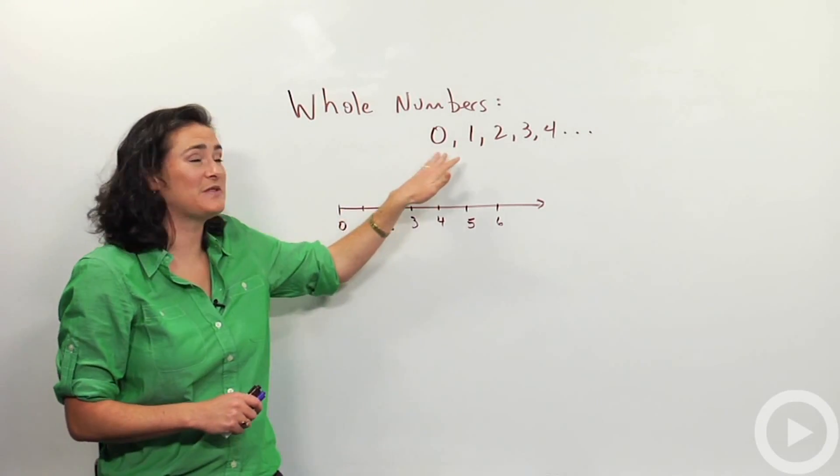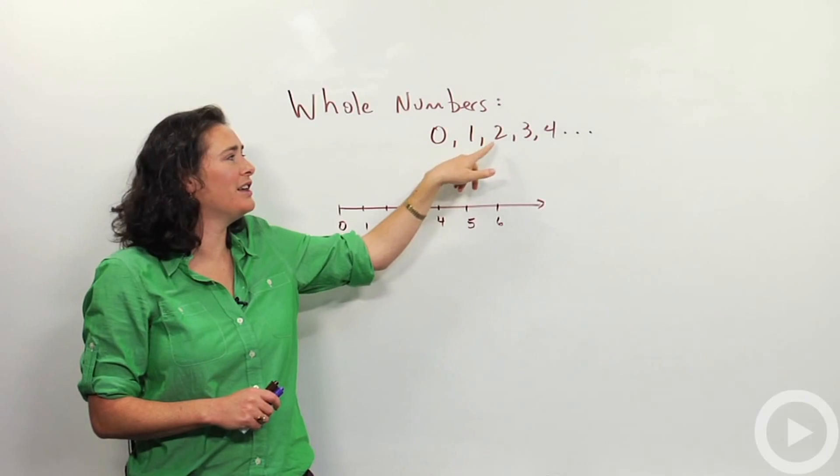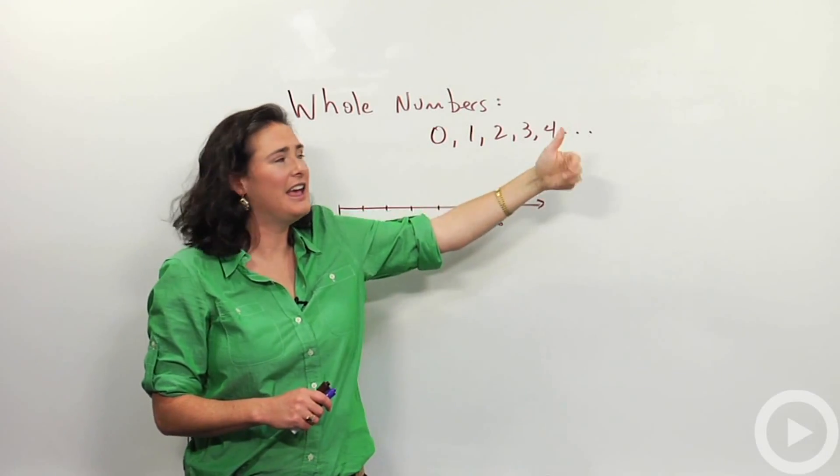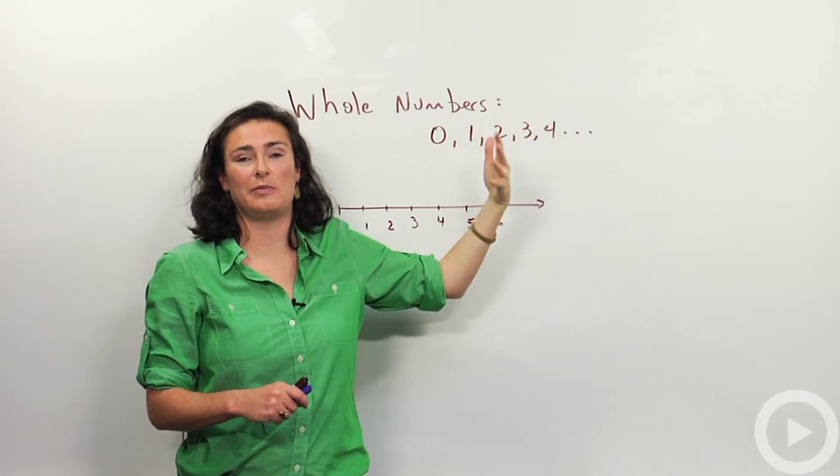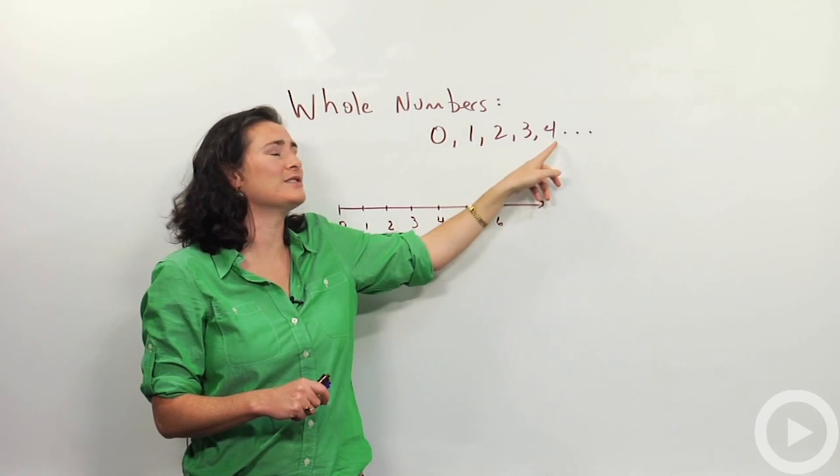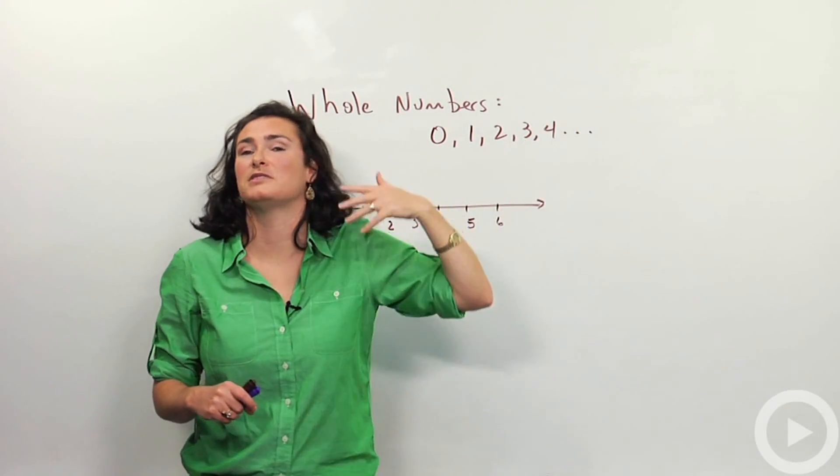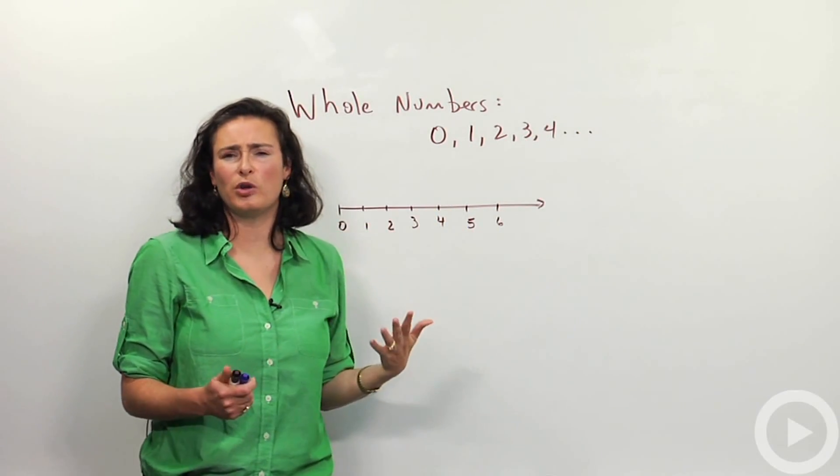A whole number is numbers from this group: 0, 1, 2, 3, 4, dot dot dot. And dot dot dot means on and on and on, like continuing the pattern. I don't just stop at 4, it also means 5, 6, 7, 8, all the way up to as high as numbers as you can count. That's what whole numbers are.